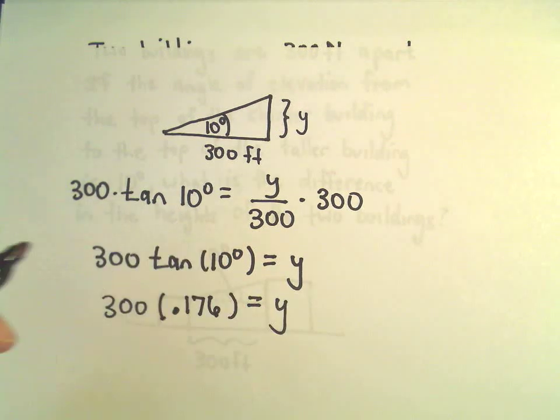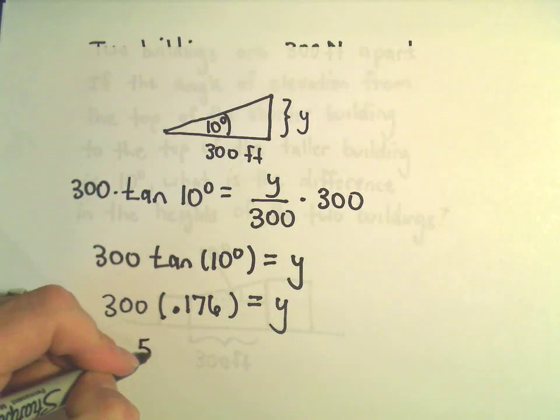We'll just round it to there. I'm just kind of arbitrarily rounding it off, and if we take 0.176 times 300, I'm getting 52.8.